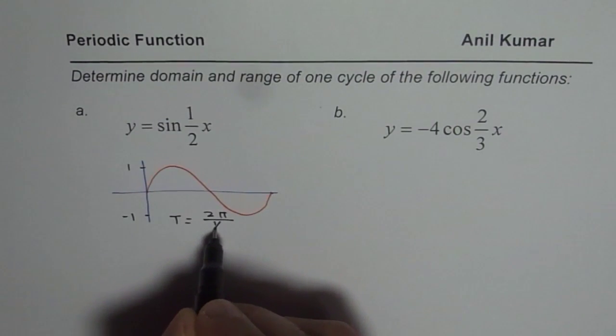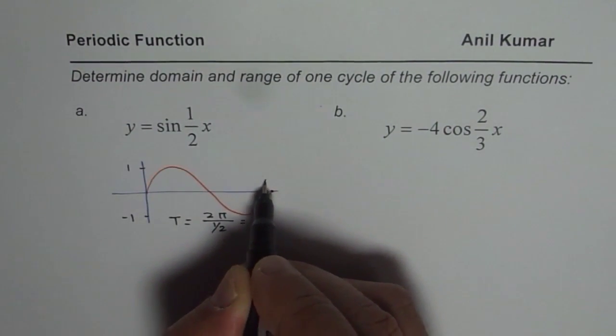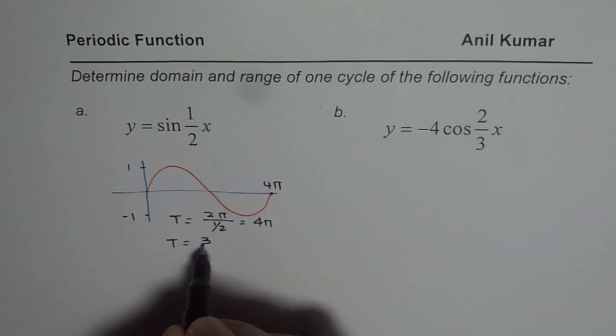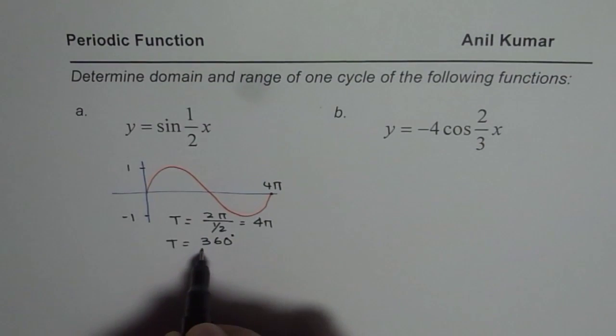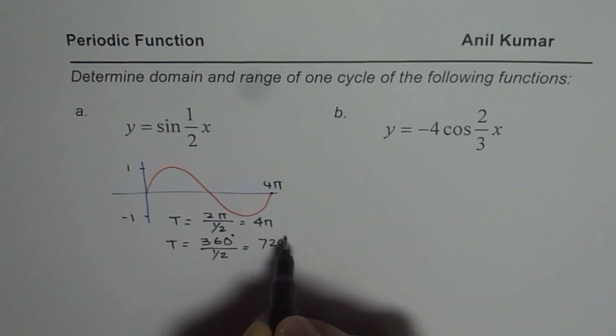As far as the time period is concerned, time period T will be equals to 2π divided by half, which is 4π. So we could write this point as 4π. Those of you who are doing in degrees could write this as 360 degrees divided by half, which gives us 720 degrees.